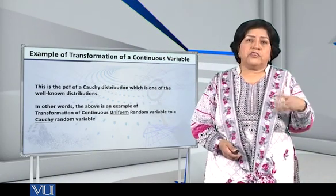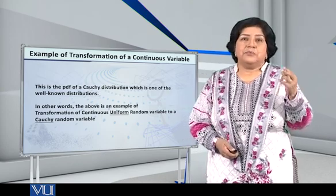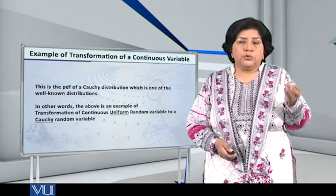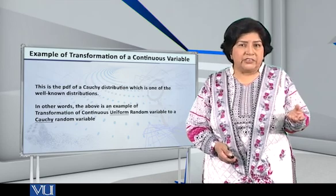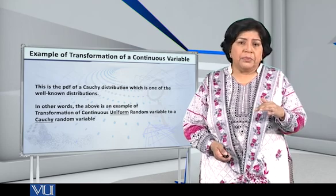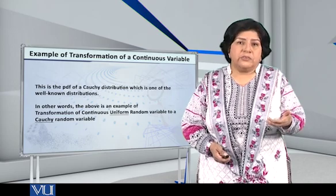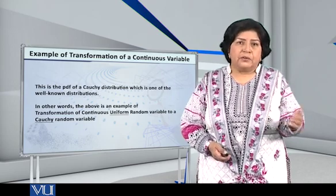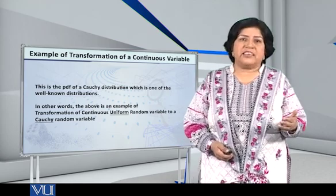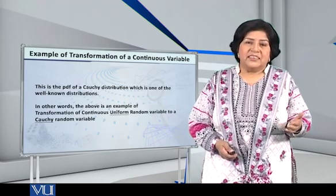Now, the gist of the whole discussion that I have just now carried out is that we have applied the method of Jacobian of transformation to a uniformly distributed random variable defined on the interval minus π by 2 to π by 2. And we have applied the transformation, the tangent transformation, I can call it. We have let y be equal to tan of x. And with this transformation, the new variable that is the Cauchy variable. Yep. Thank you.